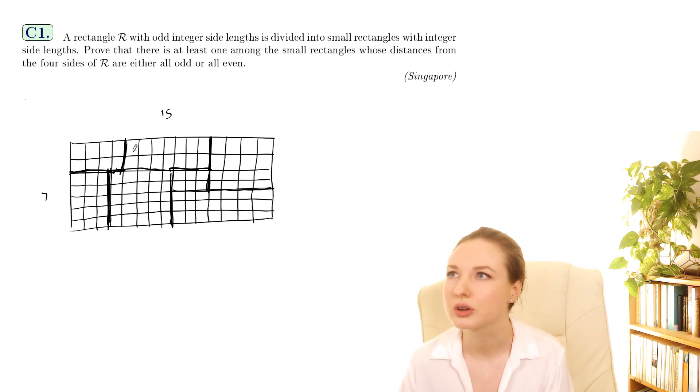So the four sides, these four sides of R. Its distance from this side, well it's touching that side so that distance is zero. Its distance from this side is the number of squares between them so that's five.